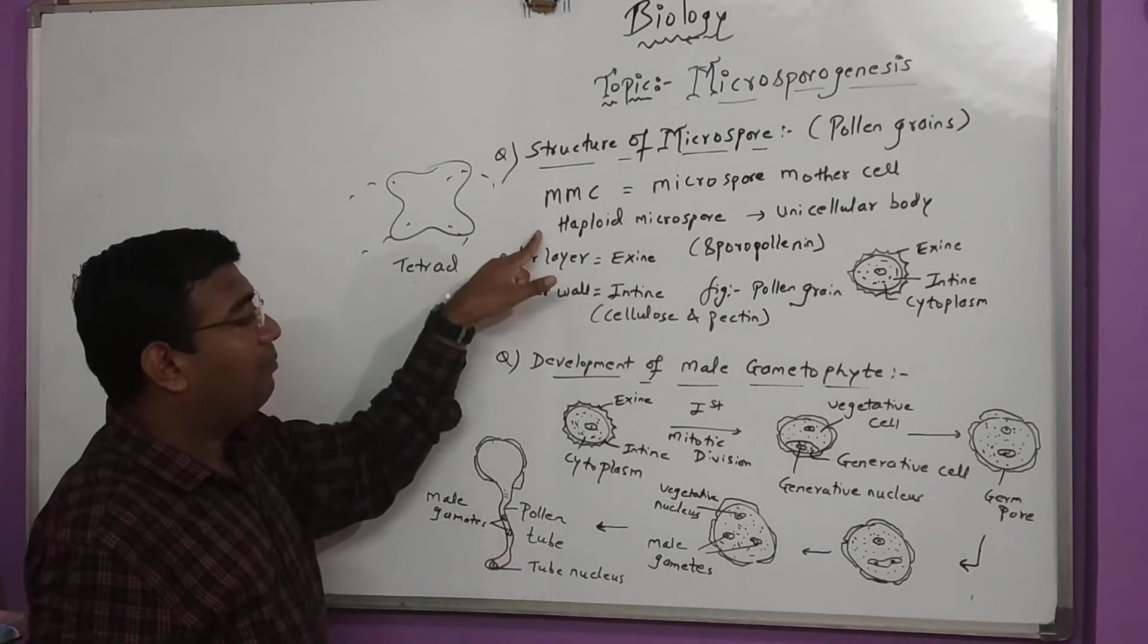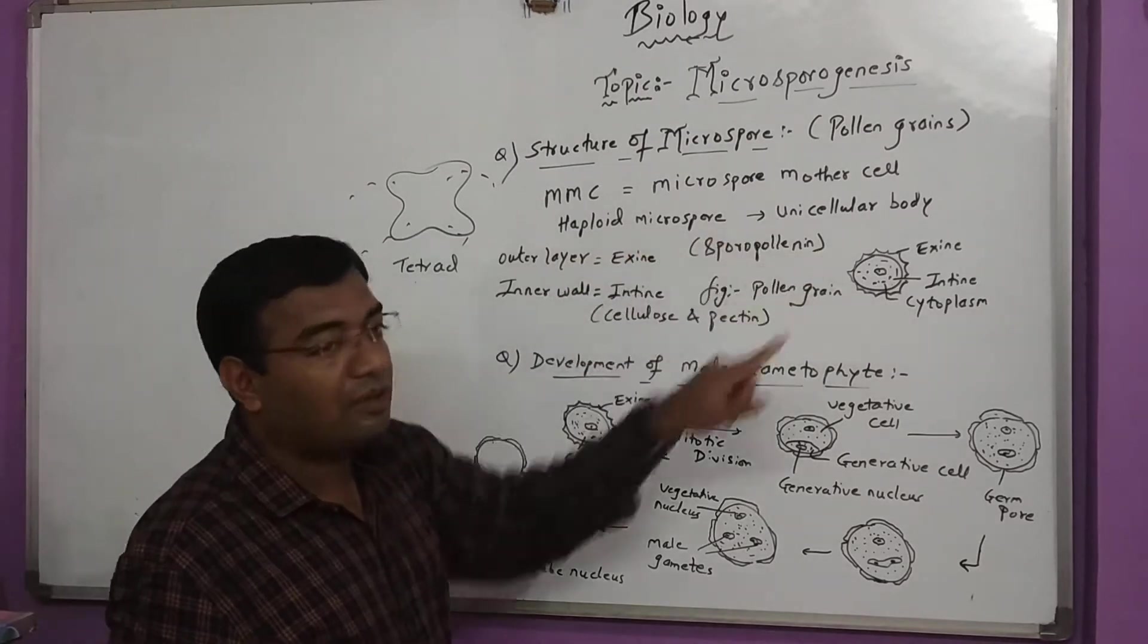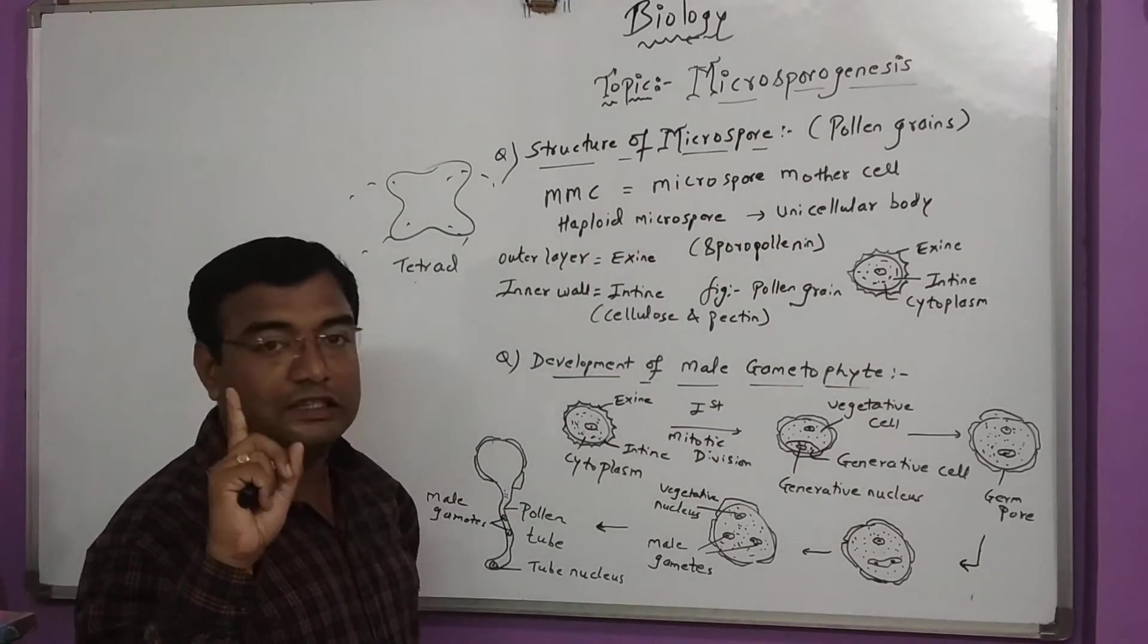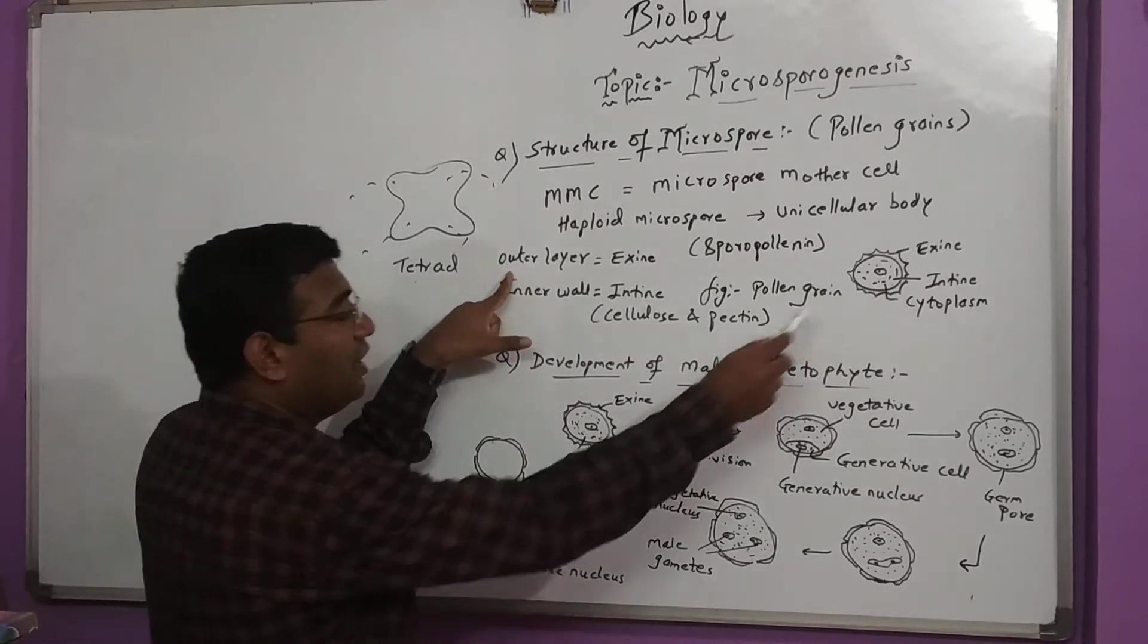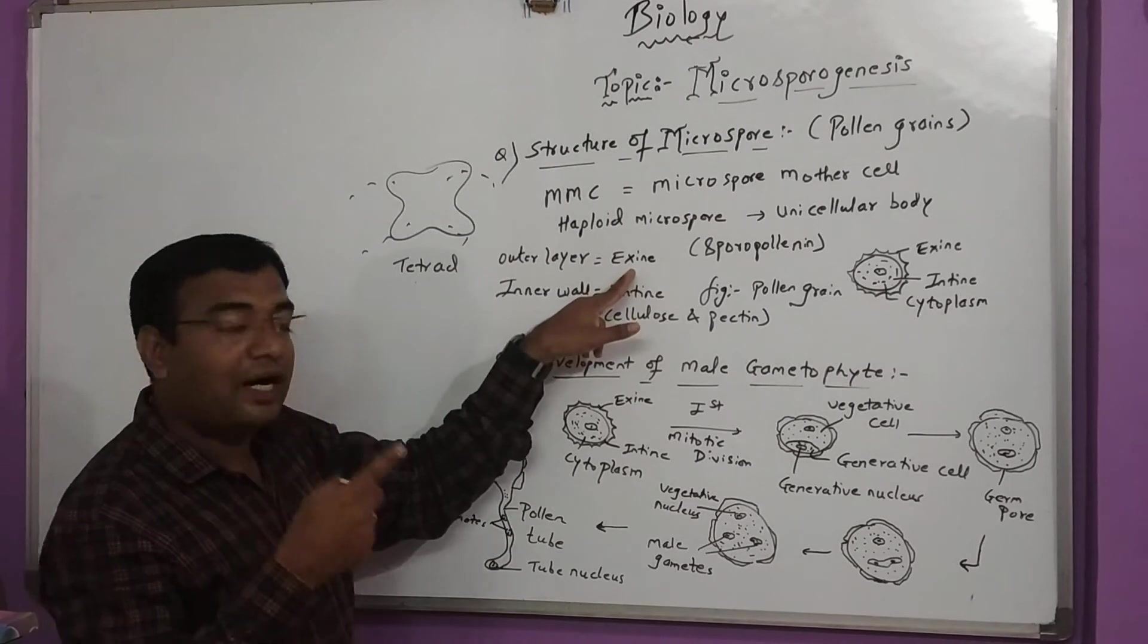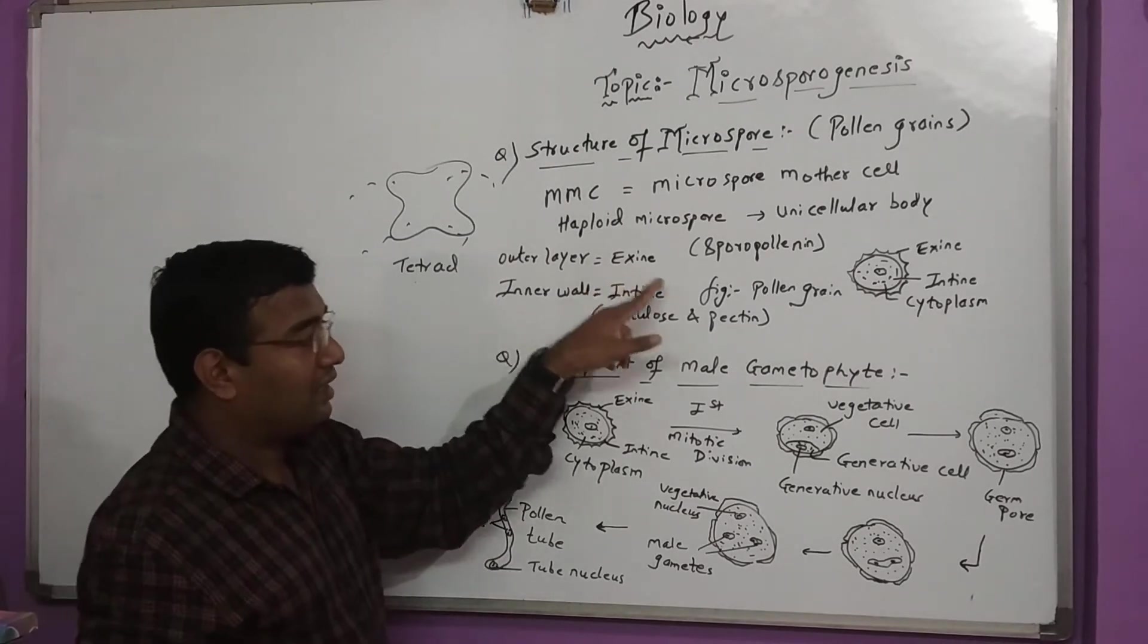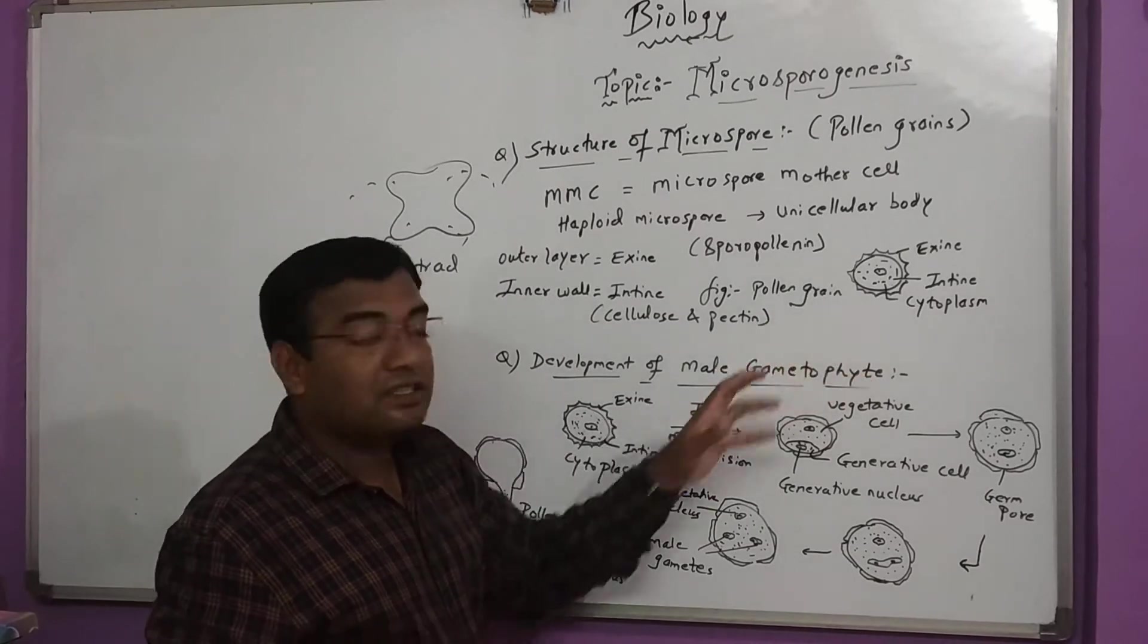Haploid microspore is a unicellular body. Haploid means presence of a single nucleus. The outer layer in pollen grain is known as exine. It can be a smooth wall or a rough wall, depending upon the species.